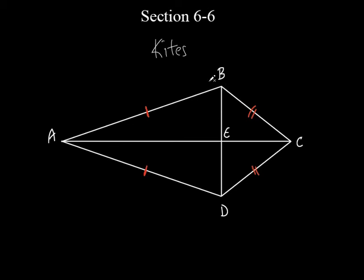Now, what about BD and AC? We did this with parallelograms, rectangles, squares, and trapezoids even. We call those diagonals. When you go from one corner to a non-consecutive vertex, it's a diagonal. It goes right through the heart of the figure.